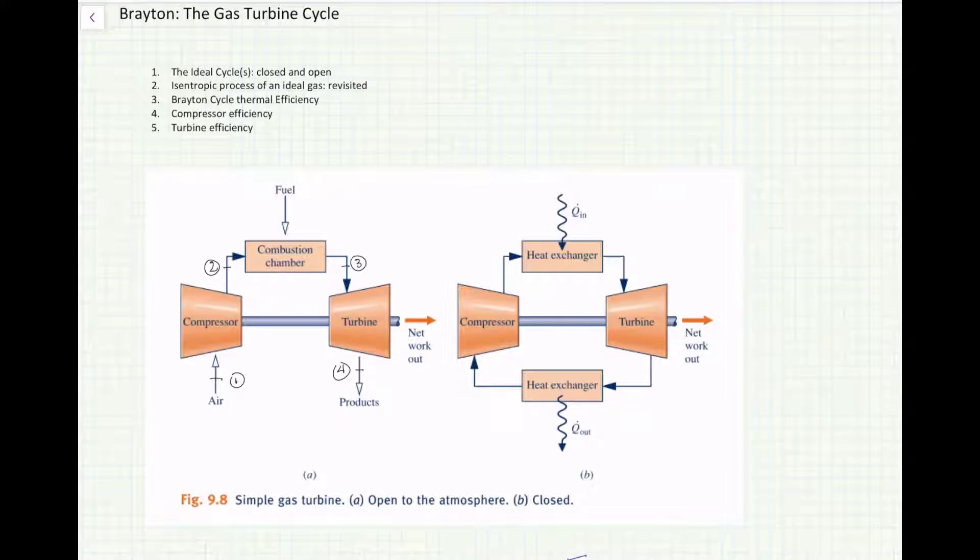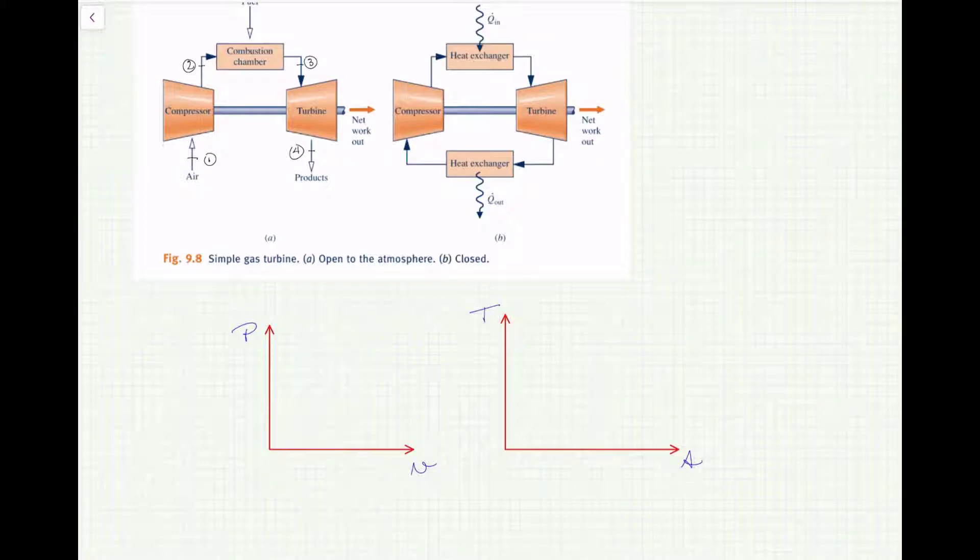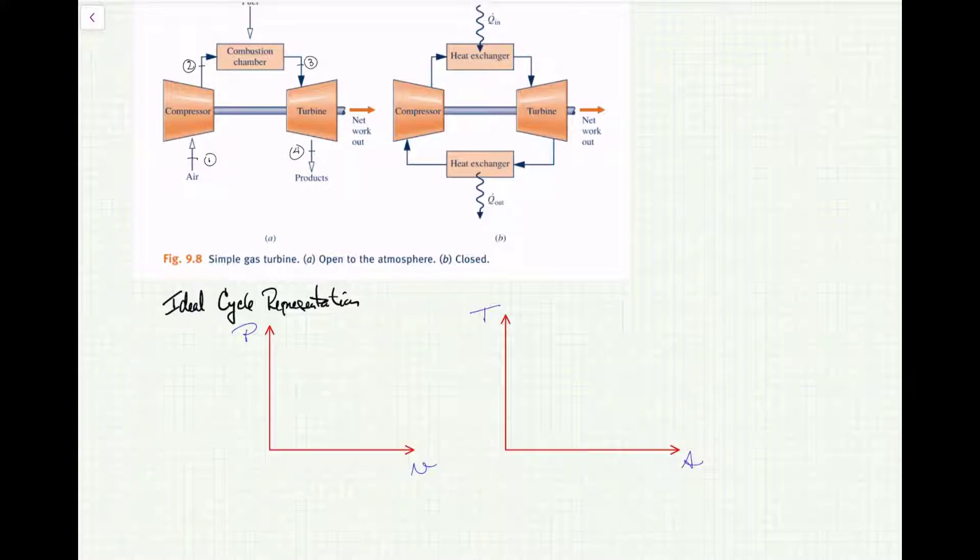Let's get started by plotting the cycle on the respective P-V and T-S diagrams. These are the ideal cycle representations, meaning we're going to assume ideal components. Let's start with the P-V diagram and label the inlet to the compressor as point 1. We're going to compress through this ideal component isentropically to state 2. On a T-S diagram, because the process is isentropic, entropy is constant—that's a vertical line from 1 to 2 across the compressor.